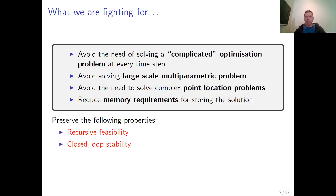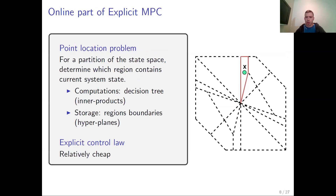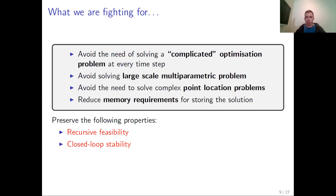Let me remind you what we were originally fighting for. When we went from MPC to explicit MPC, we were trying to avoid solving the complicated optimization problem at every time step. However, now we also want to avoid solving a large-scale multiparametric problem as in explicit MPC, and avoid the need to solve the complex point-location problem generated by explicit MPC. We want to reduce memory requirements for storing the solution, which means simplifying the boundaries of critical regions. We also want to preserve recursive feasibility and closed-loop stability given by the MPC problem formulation.